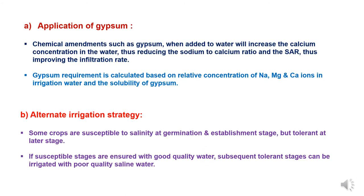First method is application of gypsum. Application of gypsum will increase calcium concentration, reduce calcium to sodium ratio, reduce sodium adsorption ratio, and increase the soil infiltration rate. The gypsum requirement will depend on relative concentration of sodium, magnesium, and calcium ions in irrigation water and the solubility of gypsum. By application of gypsum, it will improve the quality of water, which will result in good outcomes.